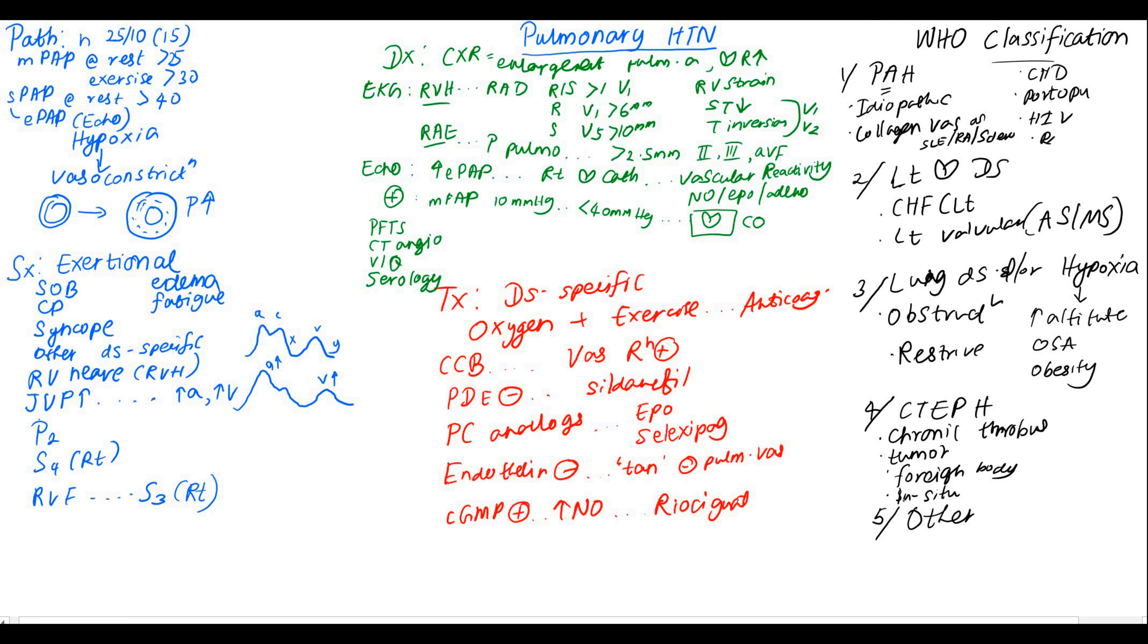The fifth category is the miscellaneous category which can be due to either hematologic causes such as sickle cell disease or chronic hemolysis. Systemic diseases such as sarcoidosis can also lead to pulmonary hypertension. Any other pathologies that we cannot specifically put into a category can be put to the fifth category.